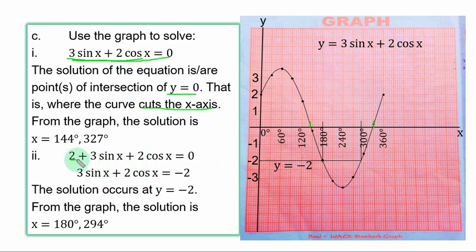Remember figure 2, you are asked to solve 2 plus 3 sin s plus 2 cos s equal to 0. This equation is not the graph that is plotted. So you need to remove 2 from here for you to get the equation that is plotted. If you take 2 to the right-hand side, it becomes minus 2. So everything here is equal to y. Therefore, the solution occurs at y equal to minus 2. So this is minus 2.